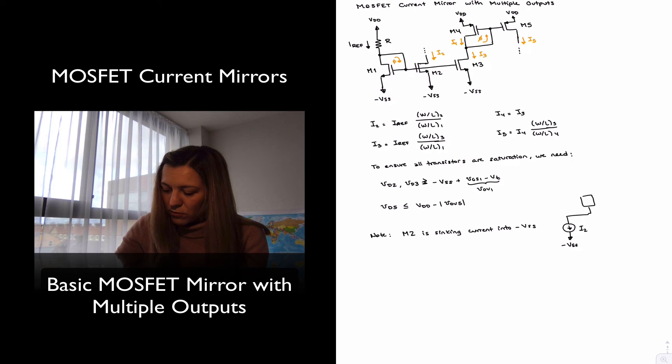So it becomes a little bit more obvious what we mean by sinking current. So here I will have my load connected to VDD, and we say that current source is sinking a current I2 into VSS, whereas in the case of the PMOS transistor M5,